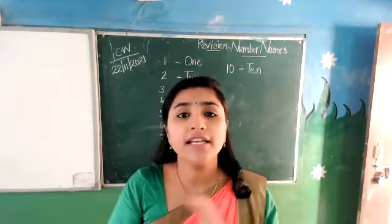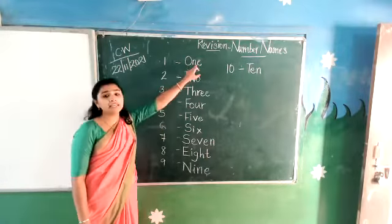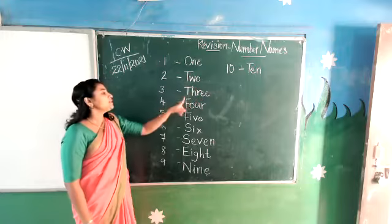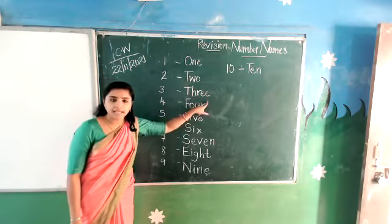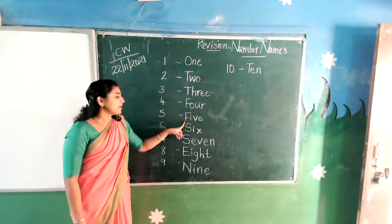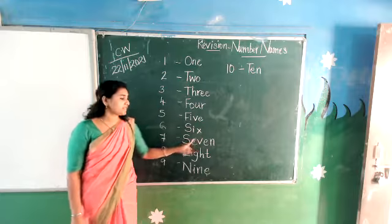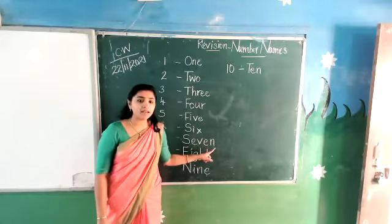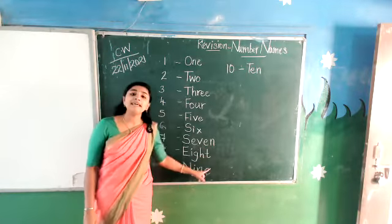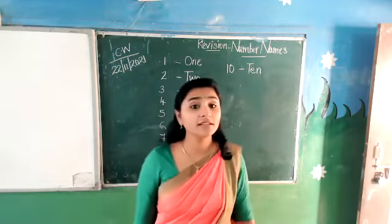All of you have to once again read. All of you see properly and read with me. O-N-E 1, T-W-O 2, T-H-R-E-E 3, F-O-U-R 4, F-I-V-E 5, S-I-X 6, S-E-V-E-N 7, E-I-G-H-T 8, N-I-N-E 9, T-E-N 10.